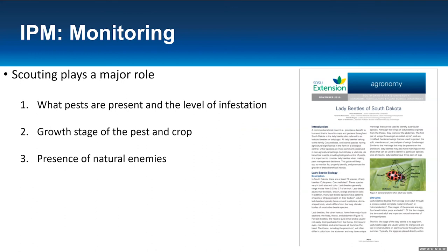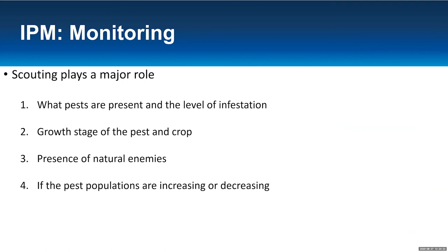Scouting for the presence of natural enemies is also important. If you have some insects in your field but you also see a lot of lady beetles or lady beetle larvae — available in our lady beetles of South Dakota guide online — and you're still below the economic threshold, hold off and wait. Those natural enemies can in some cases keep that pest population below threshold and you won't have to spray insecticide. Also monitor whether pest populations are increasing or decreasing — go out every week or every other week and count. Suggested scouting methods are available on our website. If soybean aphids or weeds are steadily increasing, start thinking about getting your sprayer or cultivator ready.